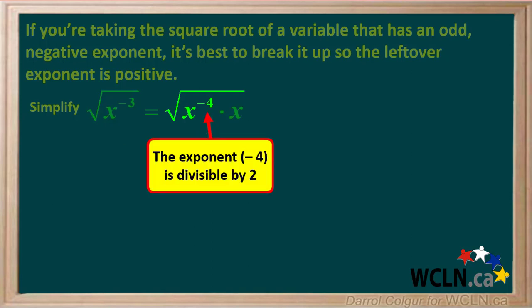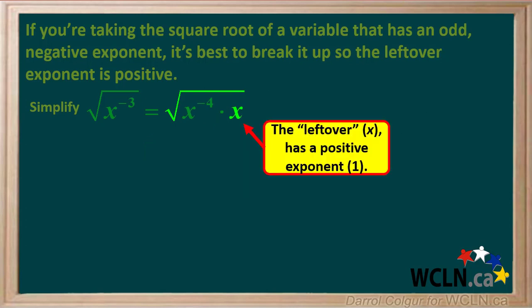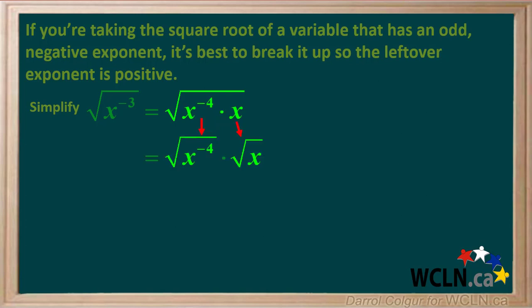The exponent in this part — negative 4 — is divisible by 2. The leftover x has a positive exponent, which is 1. We'll break up the single square root into two separate square roots: the square root of x to the negative 4 times the square root of x.